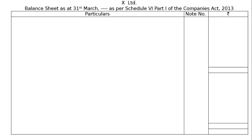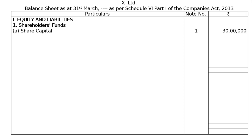Now we will make the balance sheet. We will write X Limited, and below that write balance sheet as at 31st March — take the year from the question. As per Schedule 6 Part 1 of the Companies Act 2013, we have 3 columns: particulars, note number, and amount. First comes the equity and liabilities part, then shareholders' funds, then share capital from note 1: 30,00,000. Then reserves and surplus, note 2: 4,00,000.